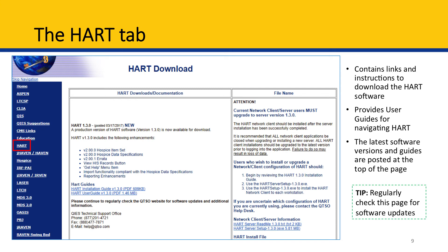Next, we have the HEART tab. HEART is a free software available to all hospice providers. It is used to convert HIS data into the proper electronic format so that it can be submitted to QTS ASAP. The HEART tab contains links and instructions to download and install the HEART software and provides user guides for navigating HEART. When a new version of HEART is available, it will be announced here, so you should regularly check this page to ensure you are always working with the latest version.